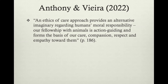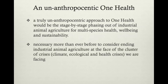Although I believe their discussion proposes a challenge to One Health, considering the link between industrial animal agriculture and zoonotic diseases that I tried to emphasise through the context of avian influenza and the poultry industry, a truly unanthropocentric approach to One Health would be the stage-by-stage phasing out of industrial animal agriculture that has proven again and again to be breeding disease. If we are really concerned with entangled multi-species health, wellbeing and sustainability, such an approach to One Health has been missing from the statements and guidelines of health organizations, although it seems necessary more than ever before to consider ending industrial animal agriculture at the face of the cluster of crises we are facing today. Thank you for listening.